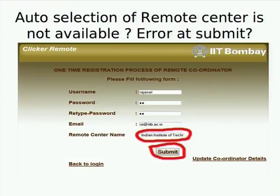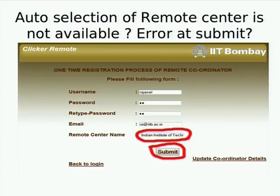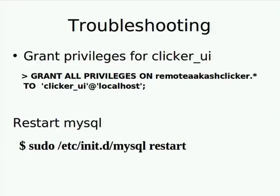The second error: some people can reach the page but the remote center name does not pop up in the dropdown. Whatever you type, it should automatically appear as a dropdown option for you to select. If it is not appearing, it means you have not granted privileges for your database. Without privileges you cannot get data from the database. The fix is simply to grant privileges, then restart the MySQL server.